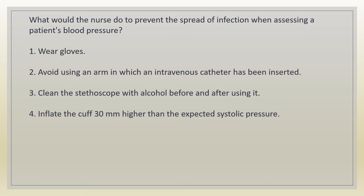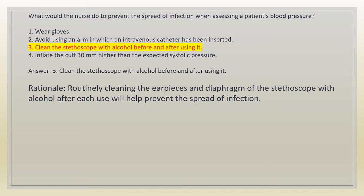What would the nurse do to prevent the spread of infection when assessing a patient's blood pressure? 1. Wear gloves. 2. Avoid using an arm in which an intravenous catheter has been inserted. 3. Clean the stethoscope with alcohol before and after using it. 4. Inflate the cuff 30 mm higher than the expected systolic pressure. Answer: 3. Clean the stethoscope with alcohol before and after using it. Rationale: routinely cleaning the earpieces and diaphragm of the stethoscope with alcohol after each use helps prevent the spread of infection.